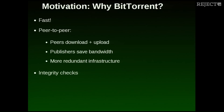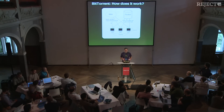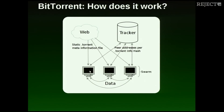BitTorrent also features integrity checks because you cannot trust random peers that send you data — more on that later. You've got a torrent file you can download from the web or send as an email attachment; they are very small. You put it in your BitTorrent client. Now that client is going to contact the so-called tracker to obtain addresses of other peers who share the same data. When you've got these addresses, you can connect to the other clients to actually share the data, and this is called the wire protocol.